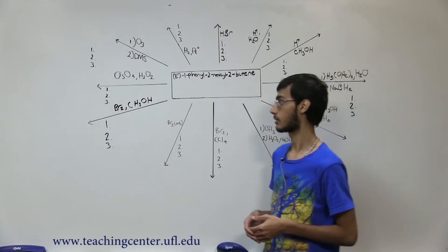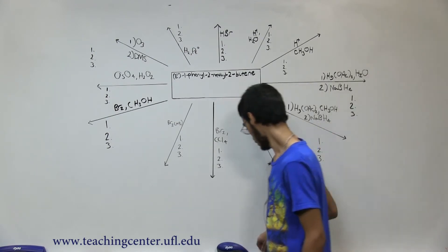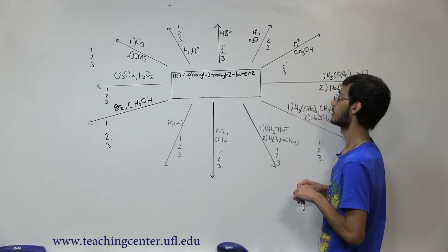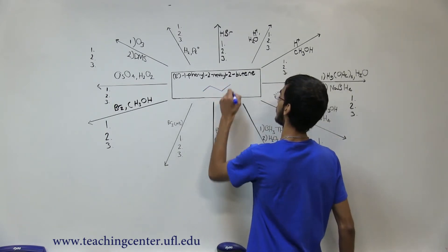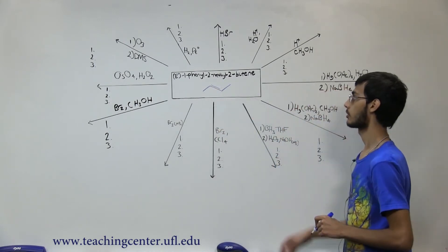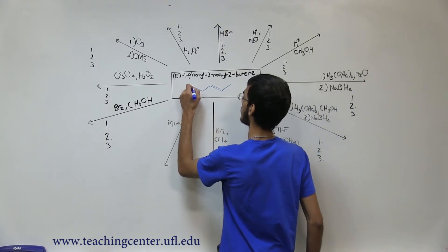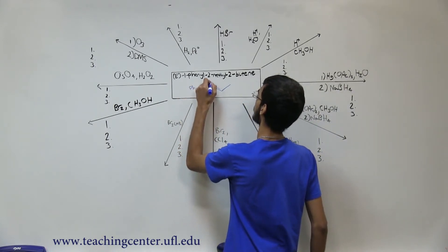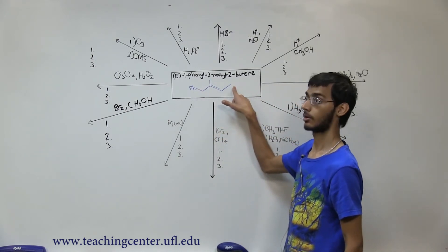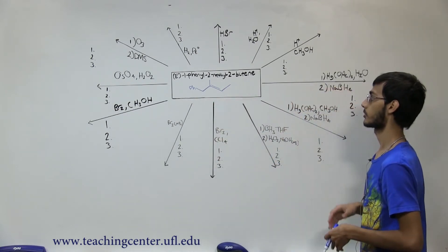The first step is to write out the structure of our starting molecule. We're going to start with (E)-2-butene: a four-carbon structure with the double bond at the 2-position. We have a 1-phenyl substituent and a 2-methyl substituent. Checking that this is E — we have first priority here and first priority here, and they're opposite — so this is the E molecule. This is our starting molecule.